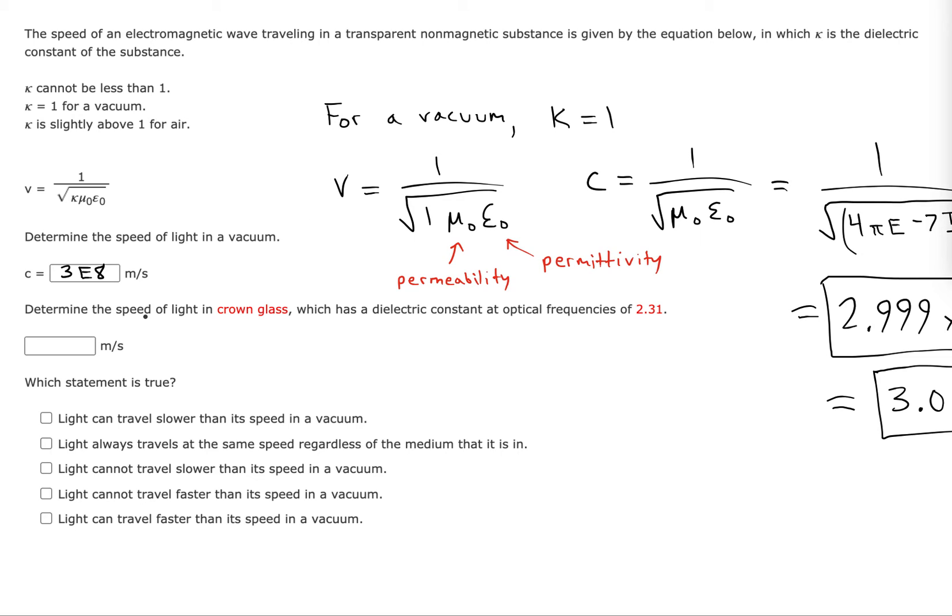Next, we want to see how fast does light travel in a different medium, in this case crown glass, where the kappa is 2.31.